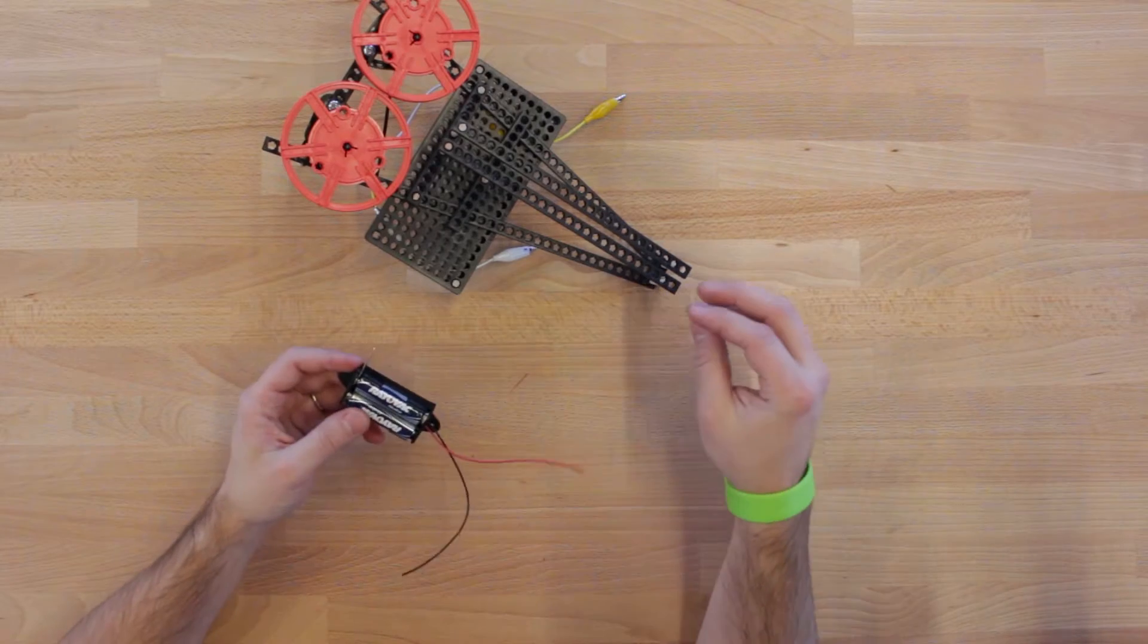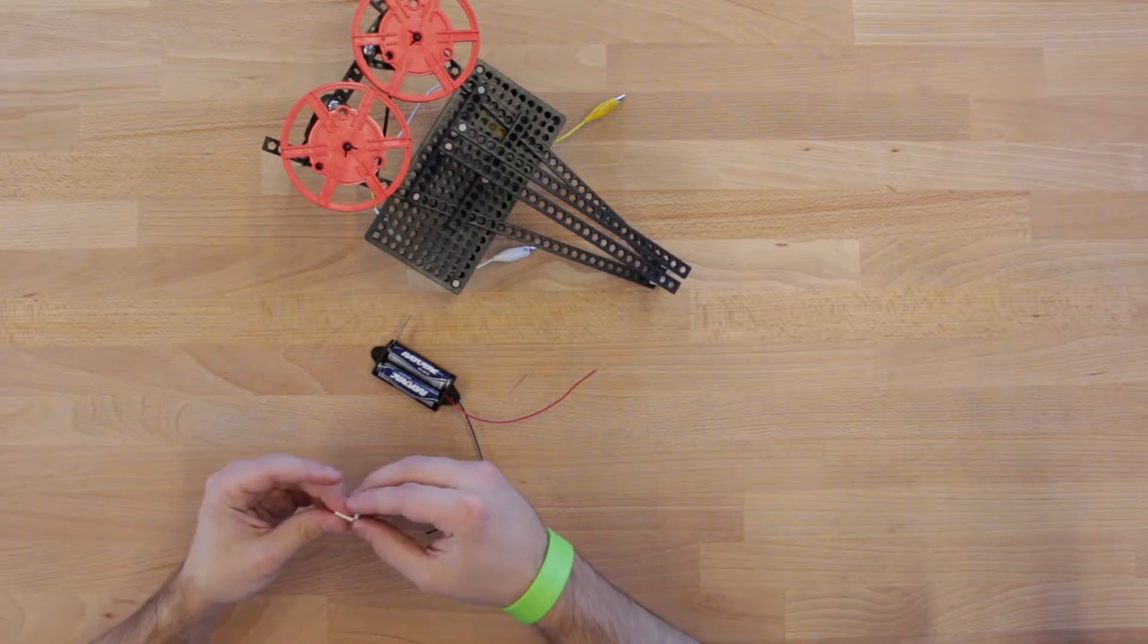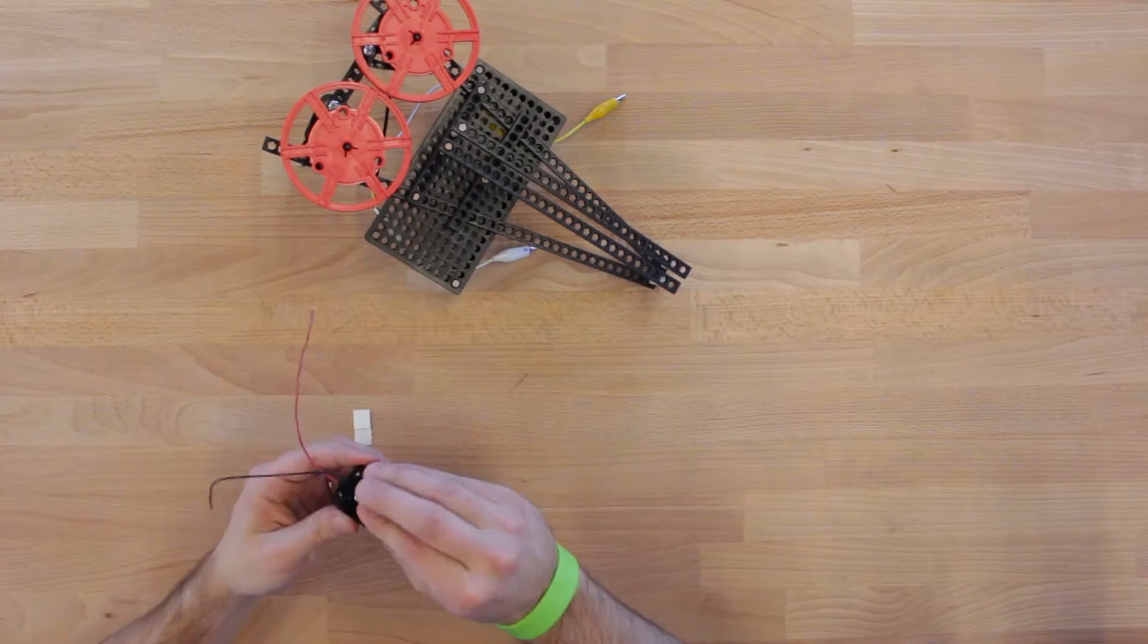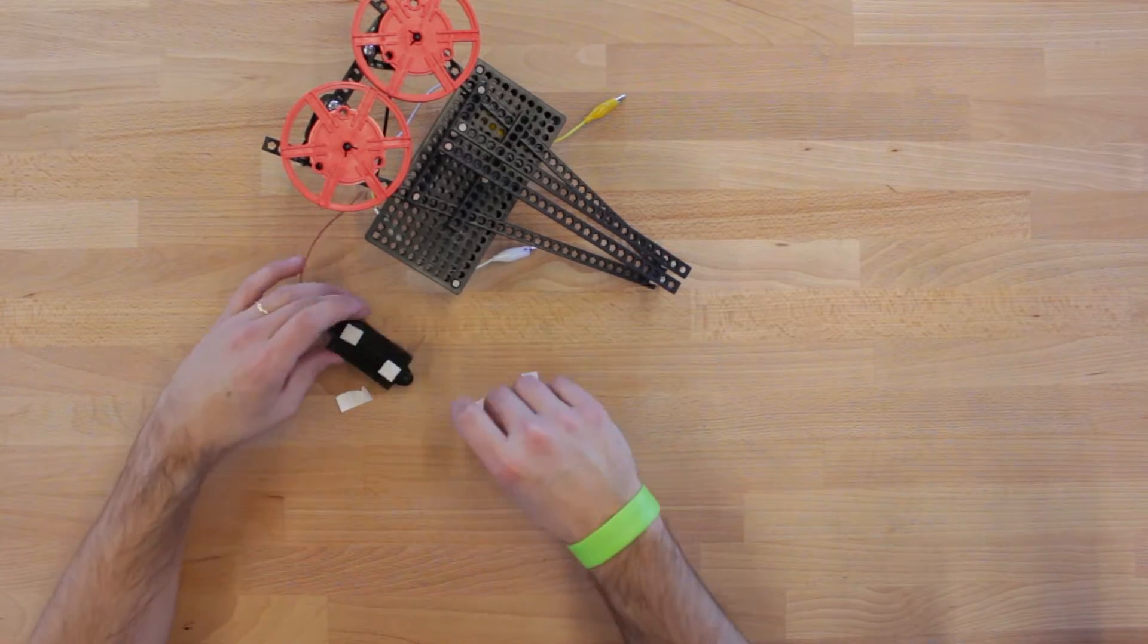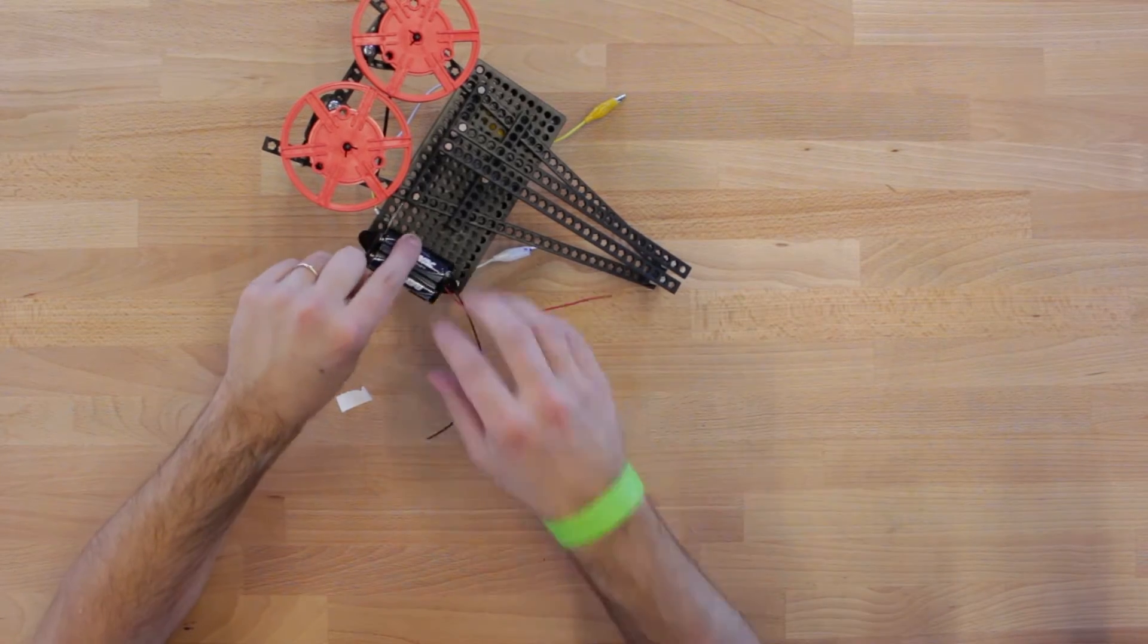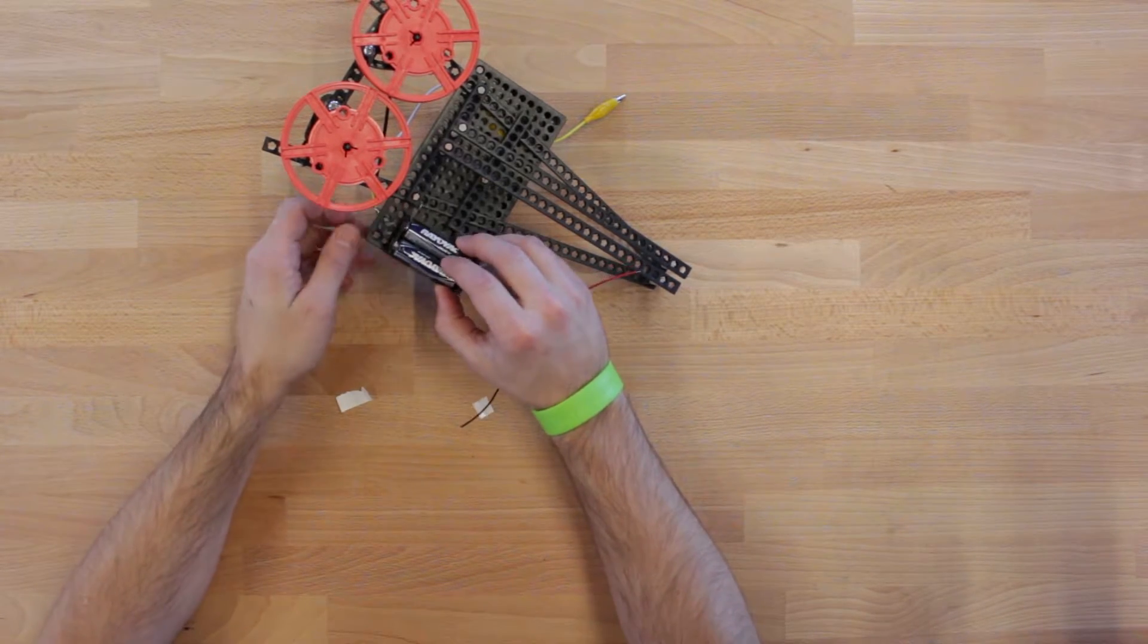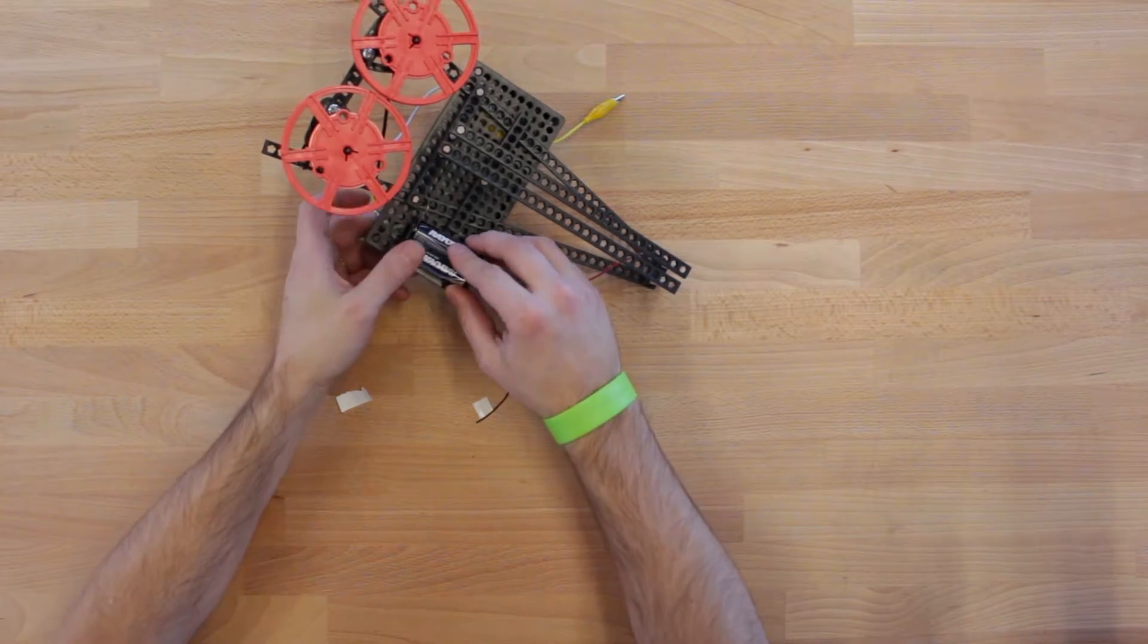Now with our batteries in our battery pack, we're going to stick the battery pack onto this black plate. You may have to shift the black plate over a little bit in order to give you room for the battery pack. We like ours on this side so that we can hold the launcher in our right hand.